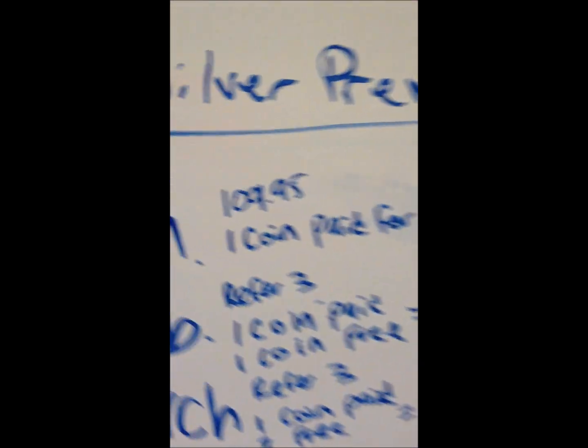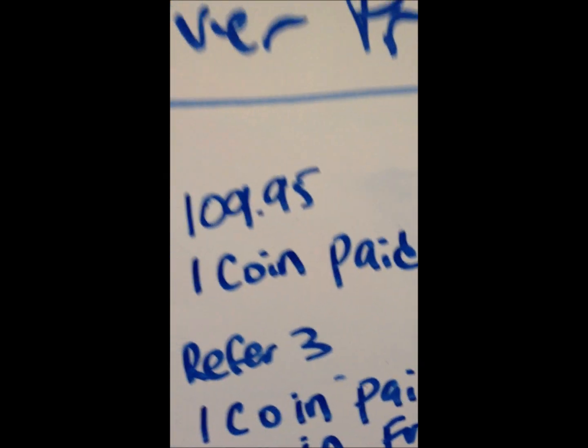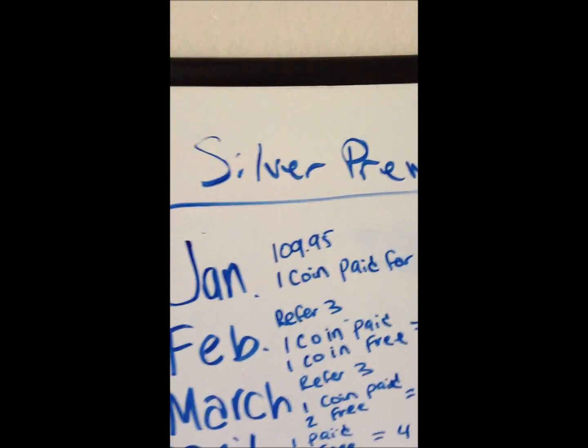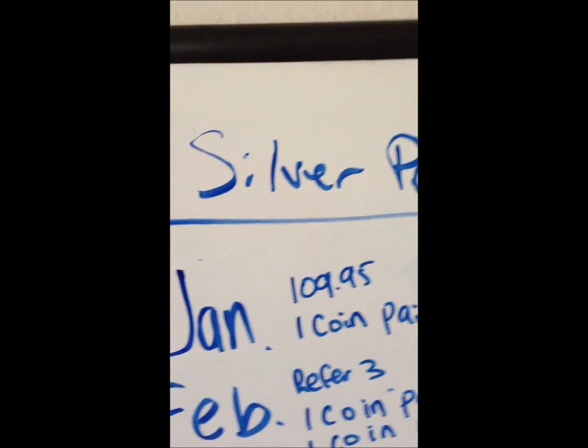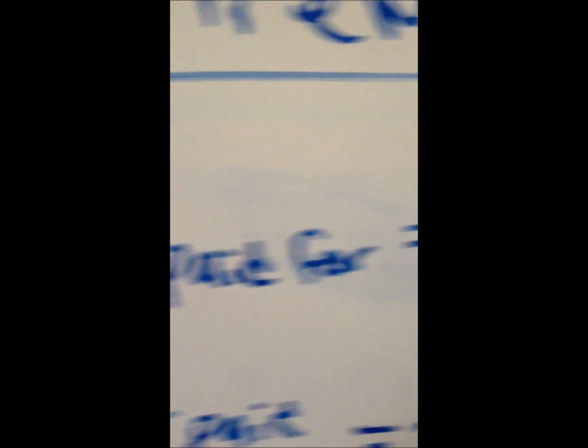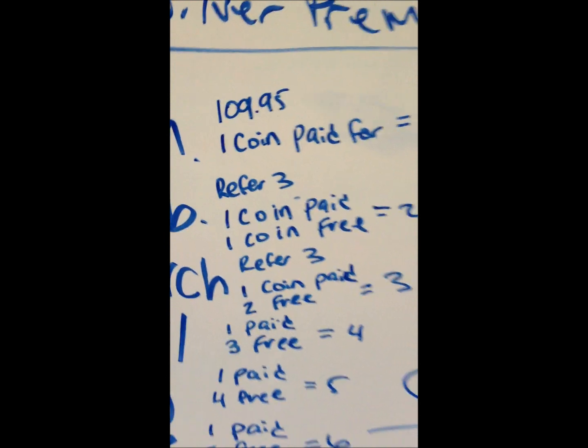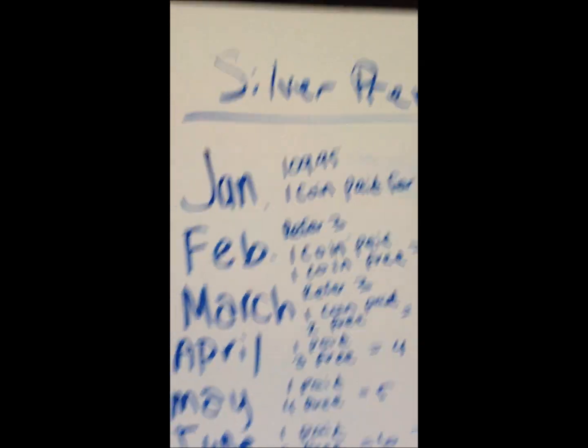But you know what? You go out, you tell your neighbor on the left, you tell your neighbor on the right, you go walk across the street, you tell that neighbor. Guess what, they all sign up. You know what that means? You get one for free the next month. So that means you're gonna pay for one coin again, $109.95, and what Numis is gonna do is they're gonna actually be the experts.